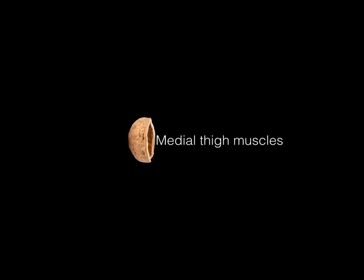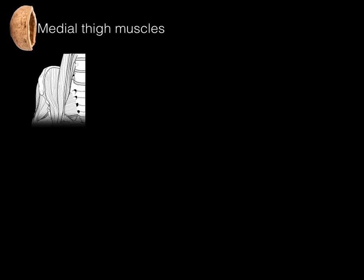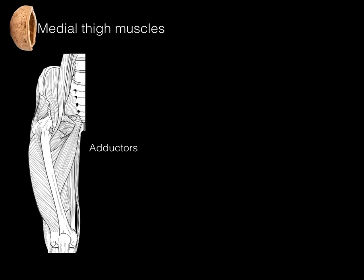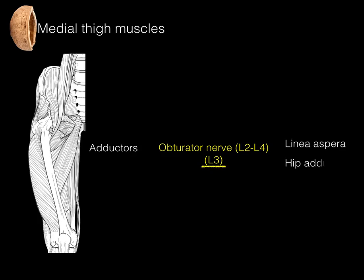So the medial thigh muscles in a nutshell: here we have our adductors — the medial compartment thigh muscles — innervated by the obturator nerve, heavy on the L3 level, mostly attaching to the linea aspera, and they cause hip adduction.